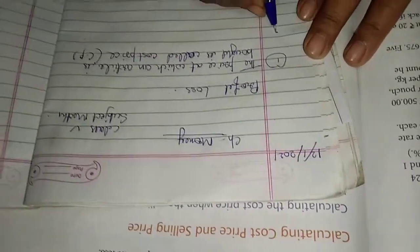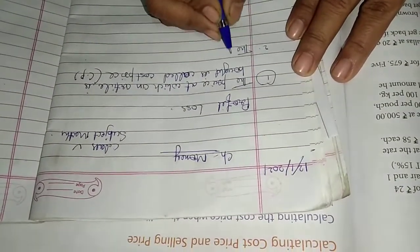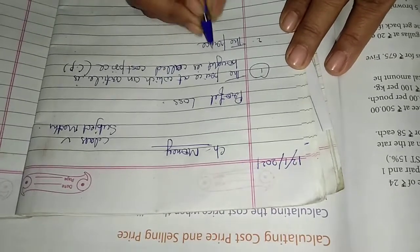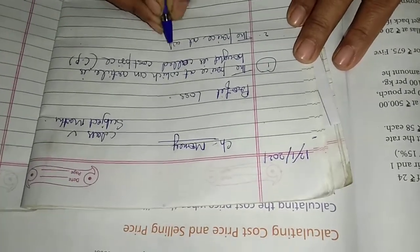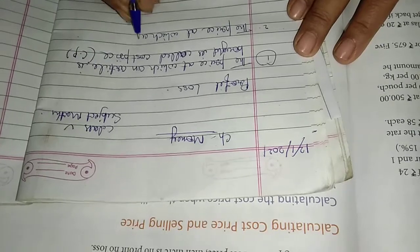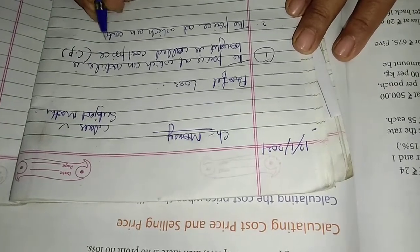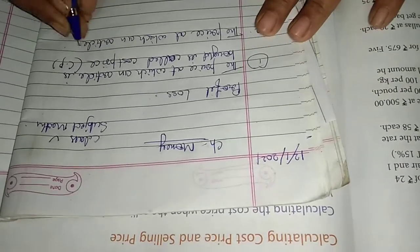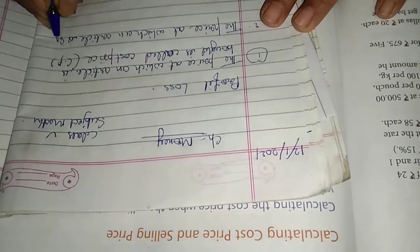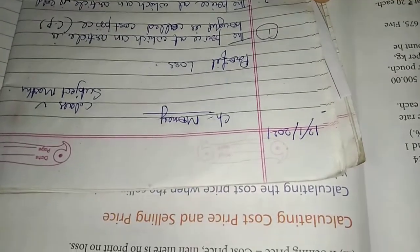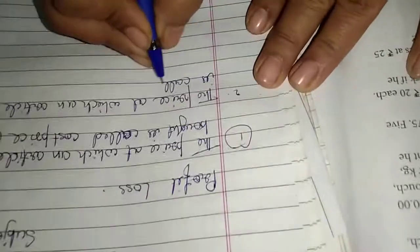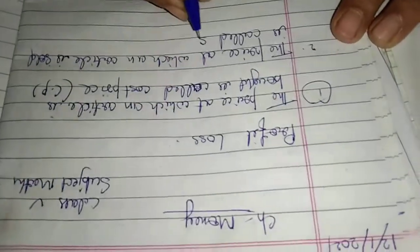And the second definition is the price at which an article is sold is called selling price, means SP.